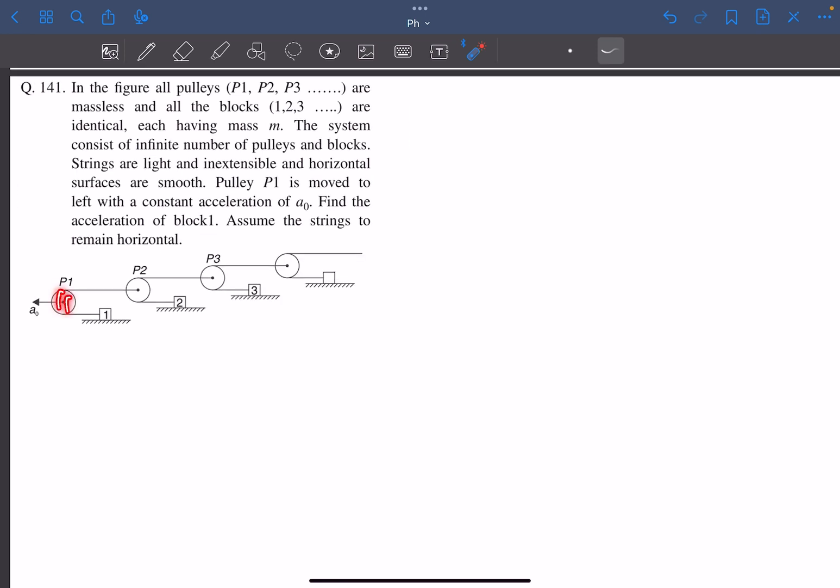We've been given a pulley mass system that continues till infinity and consists of infinite number of pulleys and blocks. The strings are light and inextensible and the horizontal surfaces are smooth. The pulley P1 is moved towards the left with an acceleration of A0, and we have to find the acceleration of block 1.